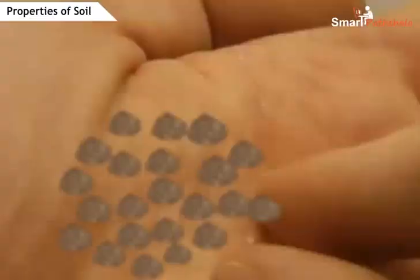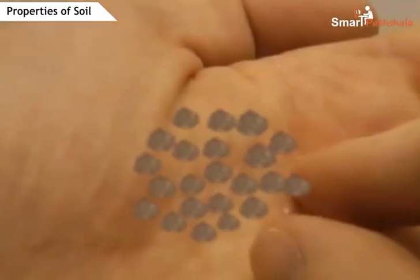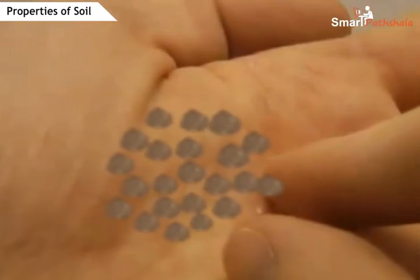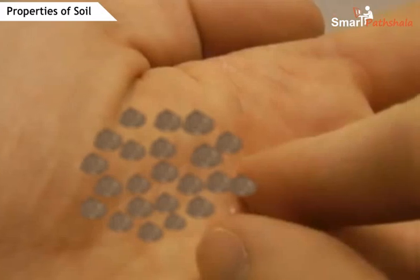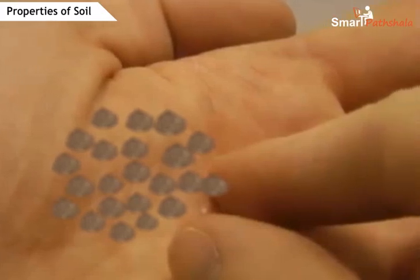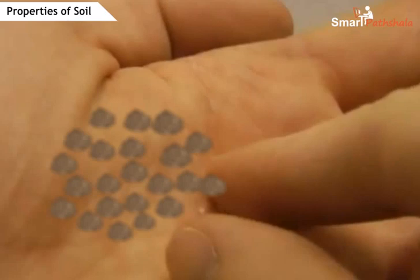After heating the soil, take it out of the tube. Compare it with the soil which has not been heated. We can observe that the moisture is less in the soil which is heated.